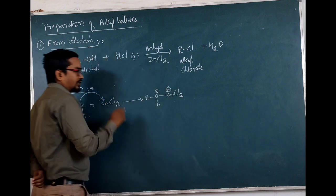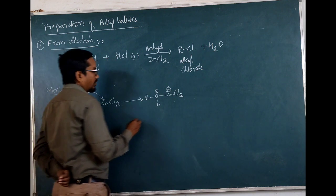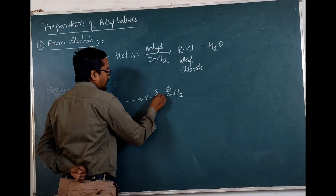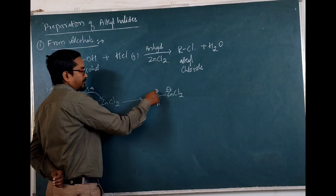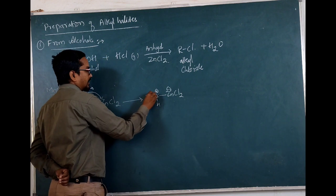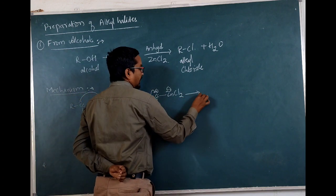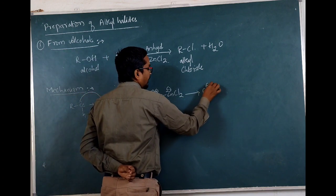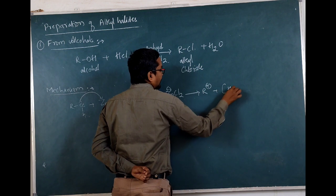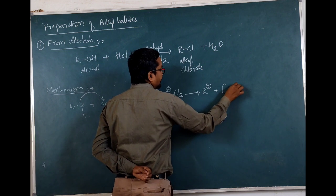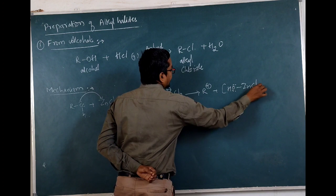This Zn will acquire a negative charge because it gains the electron. What will oxygen do? Oxygen will try to neutralize the positive charge by gaining this electron. Hence it will form the alkyl carbonium ion, plus we have OH·ZnCl2⁻.